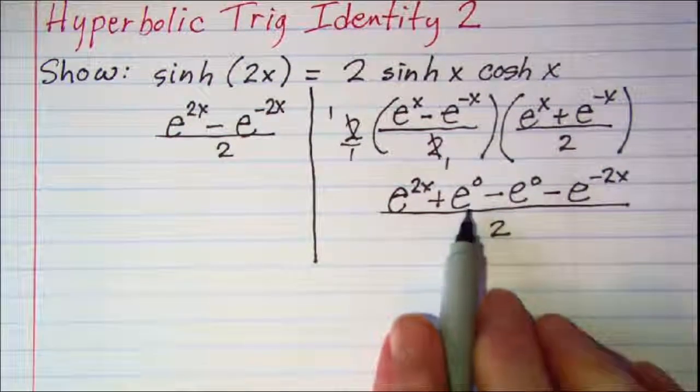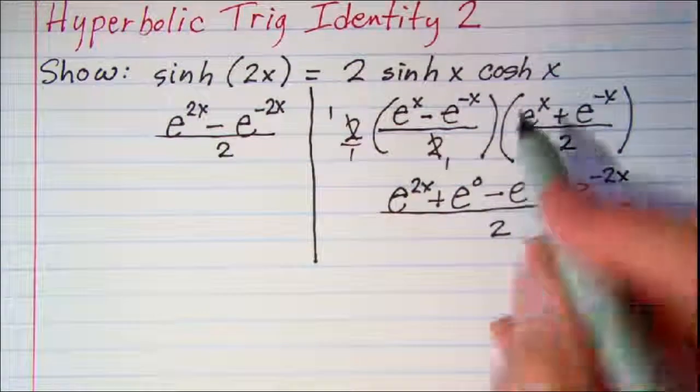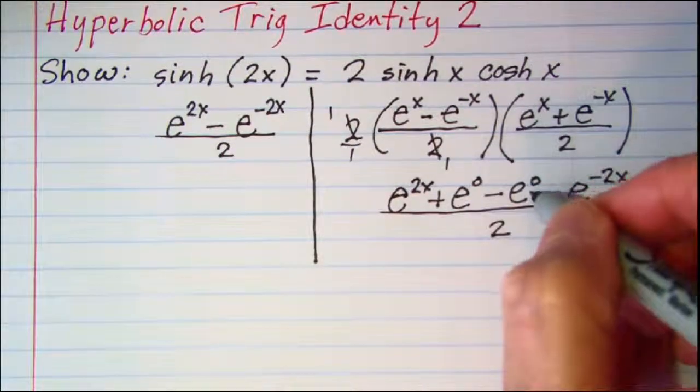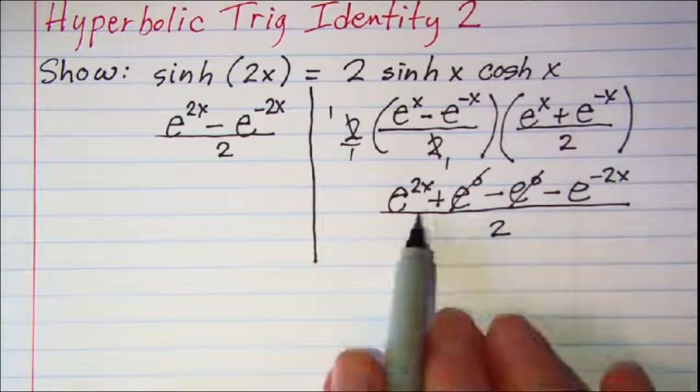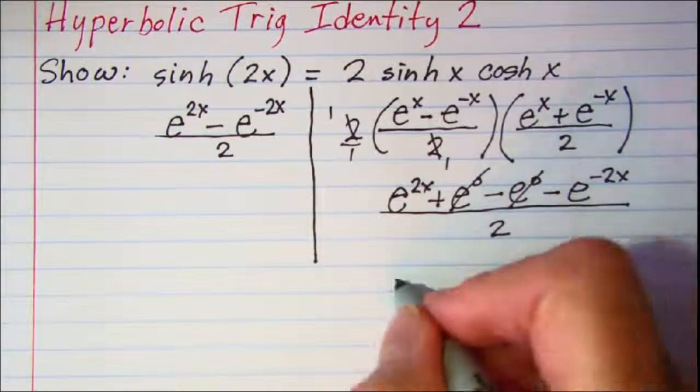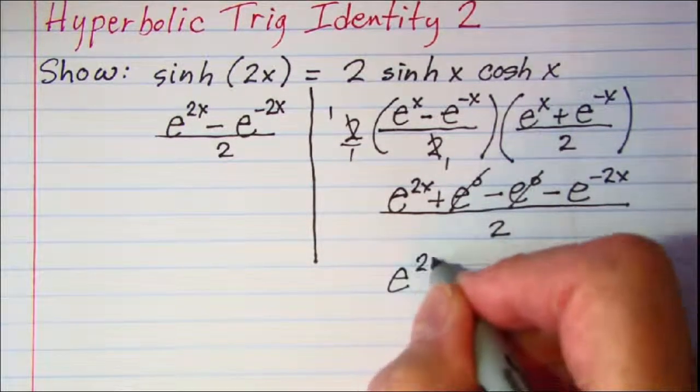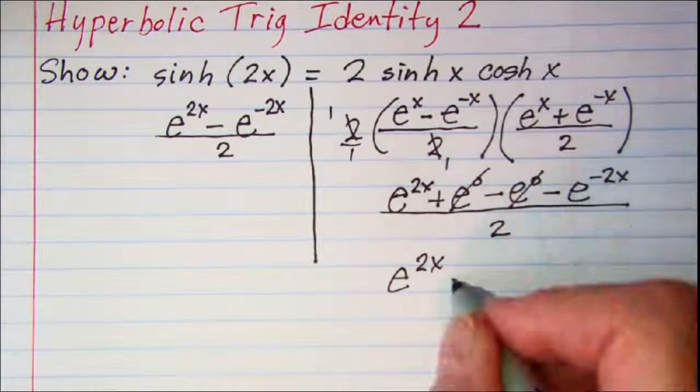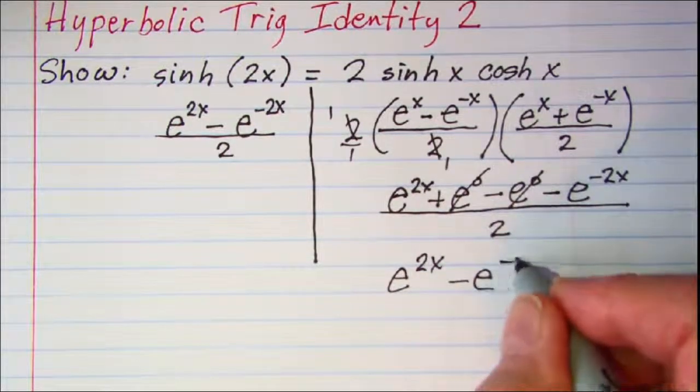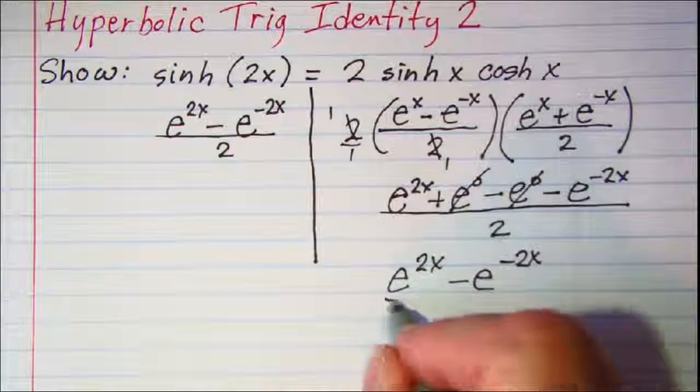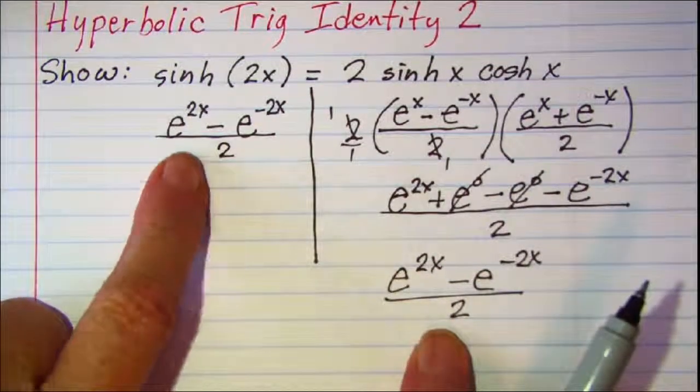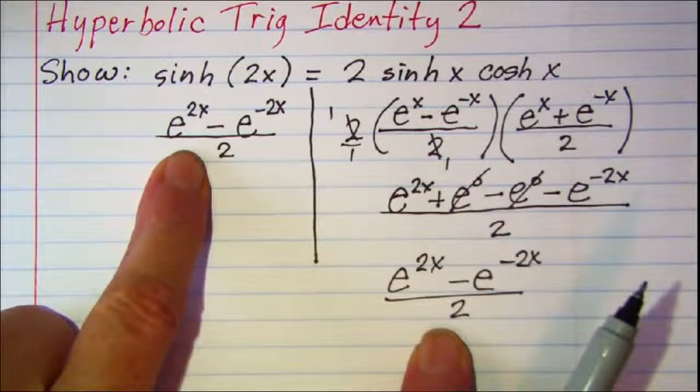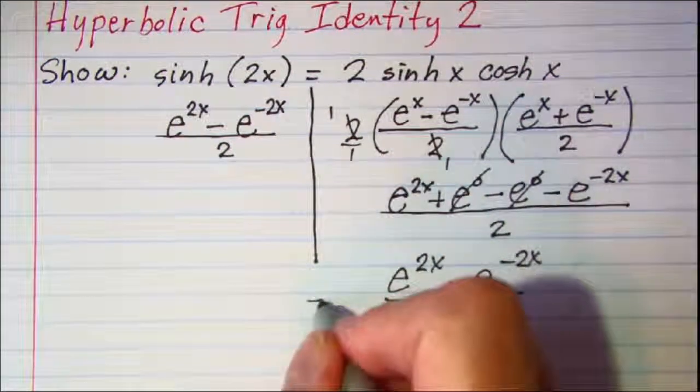Now these are ones here but this is positive and this one's negative so they cancel off. And so now I have e to the 2x minus e to the negative 2x divided by 2, which we can see is the same as this left side hyperbolic sine of 2x.